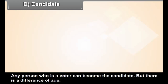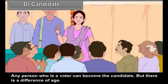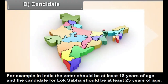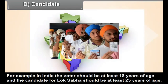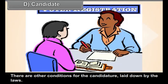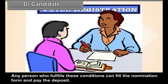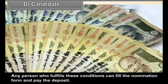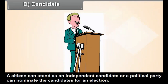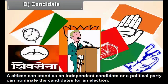Candidate: Any person who is a voter can become a candidate, but there is a difference in age. In India, the voter should be at least 18 years of age, while the candidate for Lok Sabha should be at least 25 years of age. There are other conditions for candidature laid down by the laws. Any person who fulfills these conditions can fill the nomination form and pay the deposit. A citizen can stand as an independent candidate, or a political party can nominate candidates for an election.